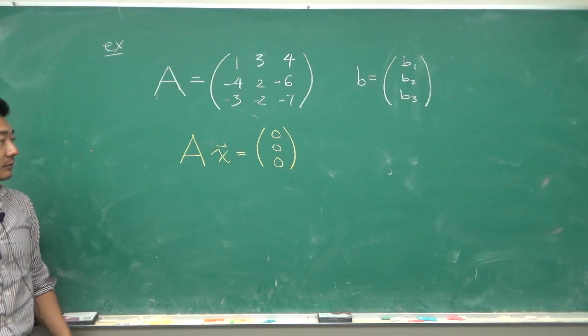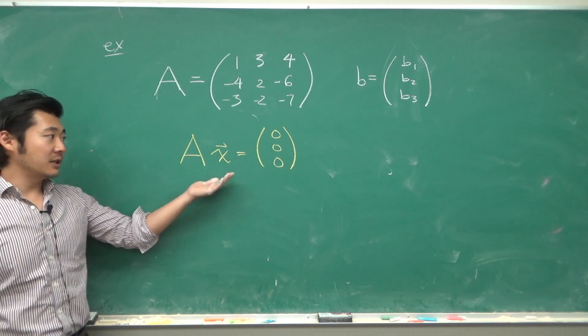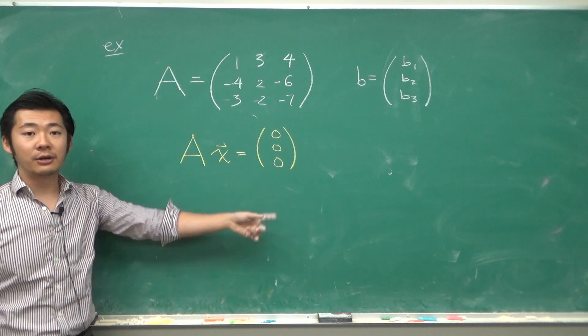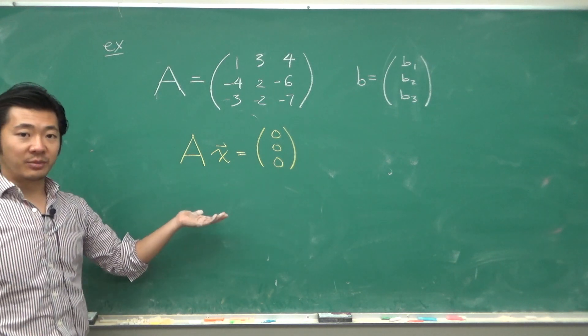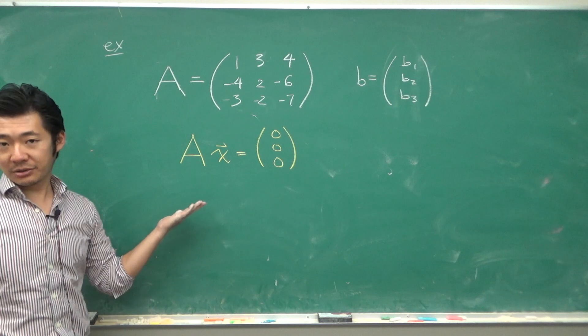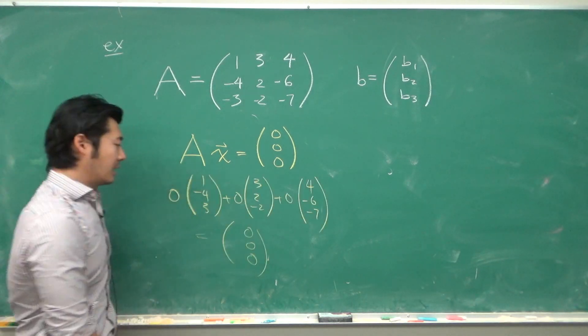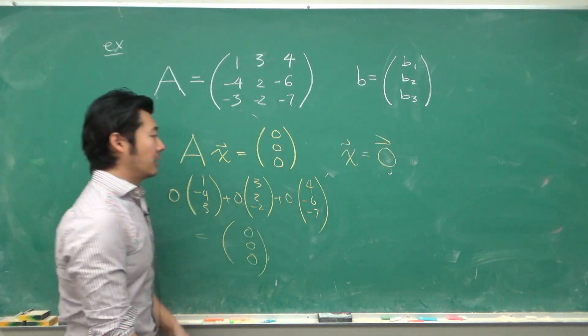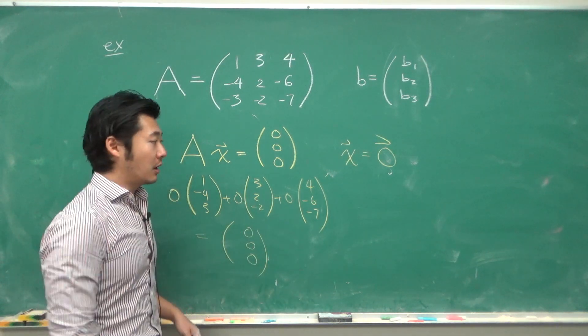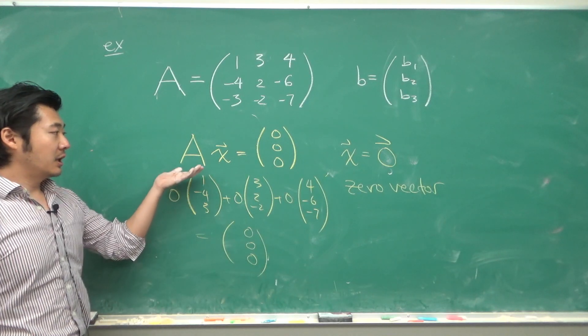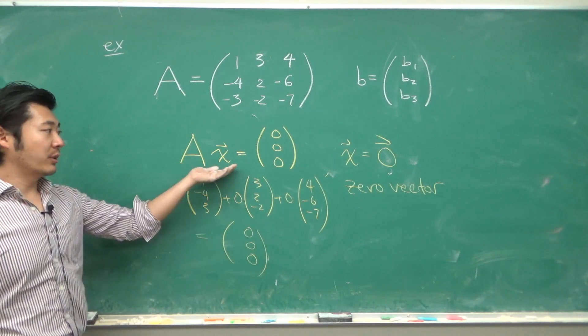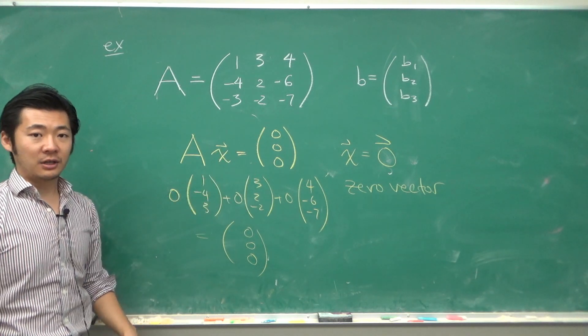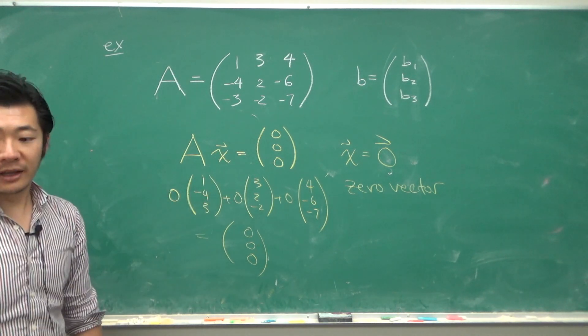For instance, consider this matrix equation: Ax = [0, 0, 0]. So the vector b is [0, 0, 0]. Well, we can always solve this in a very simple way. Just let x also be [0, 0, 0]. Then 0 times the columns of A is simply all zeros. This is a special vector called the zero vector. And when there is a matrix equation where b is equal to 0, that also has a special name called the homogeneous equation, which we will talk about in the next video.